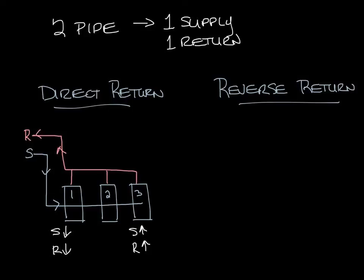In reverse return piping the losses from the supply through the unit and out the return are balanced through the three units. So let's draw our three units again and have our supply that looks the same as before coming in through the first unit to the second to the third. But your return looks like this.